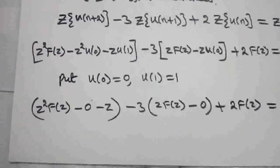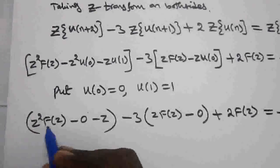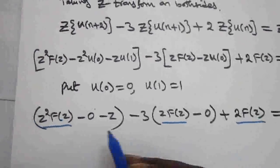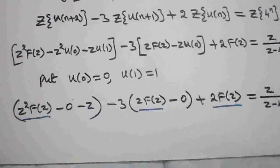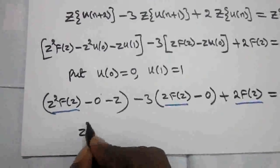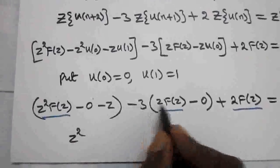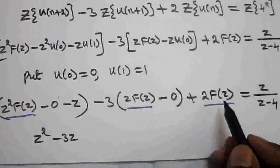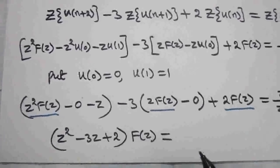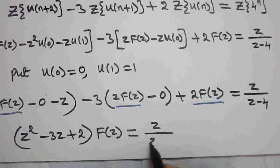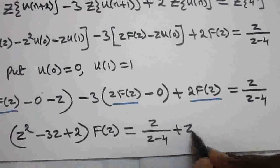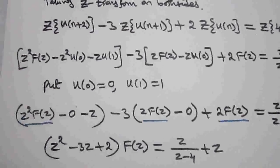Now I am going to separate F(z). Collecting all F(z) terms on the left hand side: (z² minus 3z plus 2)·F(z). The term not containing F(z) is minus z, which goes to the right hand side. So we have (z² minus 3z plus 2)·F(z) equals z/(z−4) plus z.